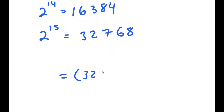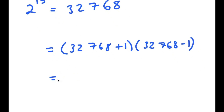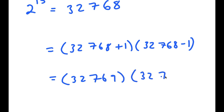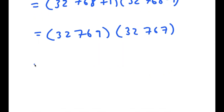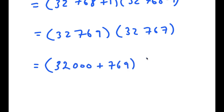So I have 32,768 plus 1 times 32,768 minus 1, which is equal to 32,769 times 32,767. Now, a simple way to solve this instead of multiplying them the regular way is to write this as 32,000 plus 769, times 32,000 plus 767.